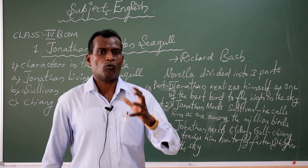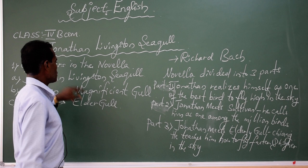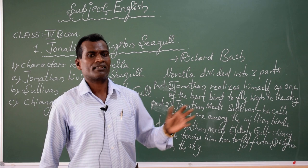The novella introduces three very important characters. The first character is Jonathan Livingstone Seagull — one of the highly talented and highly appreciable birds, who flies faster and higher in the sky.